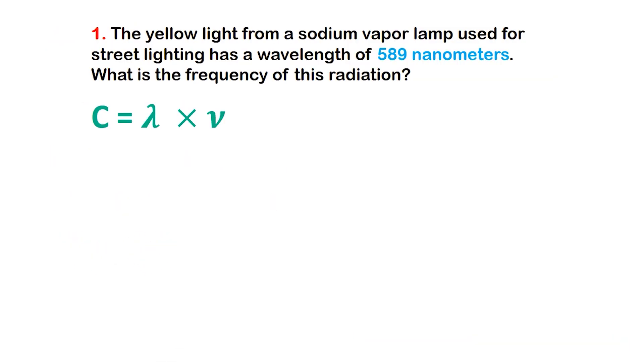Now that we understand the equation and the role of each variable, let's put it into action with a real example. Problem 1. Yellow light has a wavelength of 589 nanometers. What is its frequency?